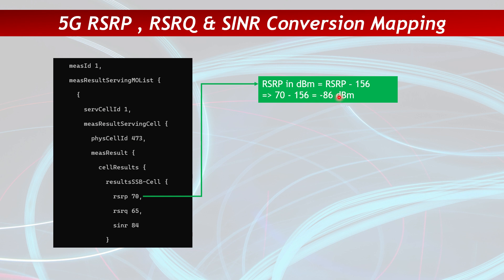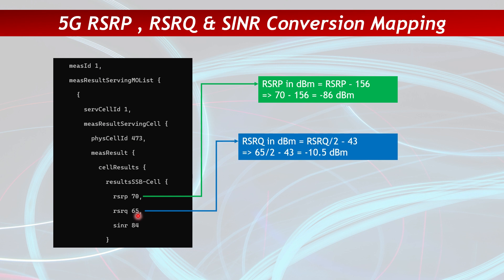In case of LTE, the conversion was RSRP minus 140, but in 5G it becomes RSRP minus 156. Similarly for RSRQ in 5G, the formula is to divide the reported value by 2 and then subtract 43. So if the value is 65, then 65 divided by 2 minus 43 equals minus 10.5 dBm — that is the RSRQ of this UE.